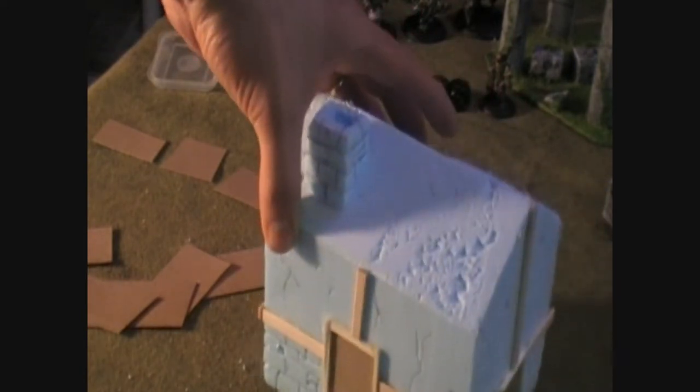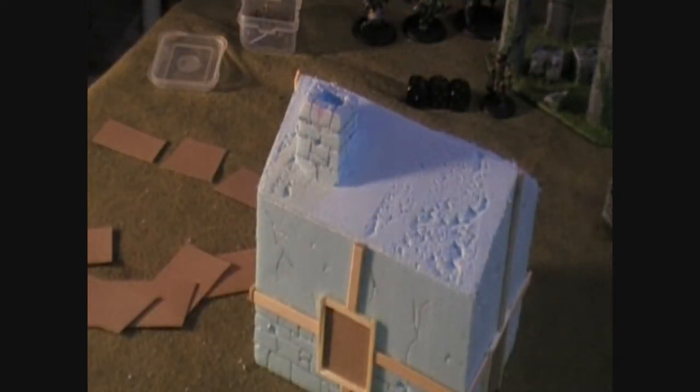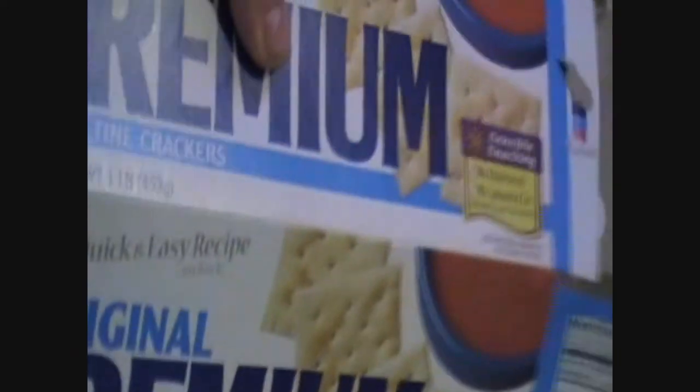Now what we're going to talk about is building the roof or shingling the roof. This is where things get really expensive because we're talking about cardboard. Just kidding. This is actually a really cheap way to do a roof. Just cut up some cardboard from a cereal box or whatever, and you've got basically a pile of shingles.